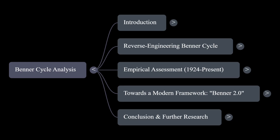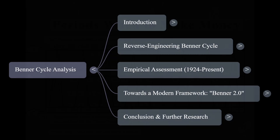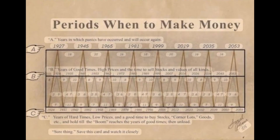Samuel Benner's cycle chart, from around 1875 — that's the one. It has this enduring allure, especially after all the crashes we've seen: the dot-com bubble, 2008, even COVID in 2020. People crave certainty, and Benner's chart offers a simple roadmap, a calendar of boom and bust, while modern finance feels so much more probabilistic and uncertain.